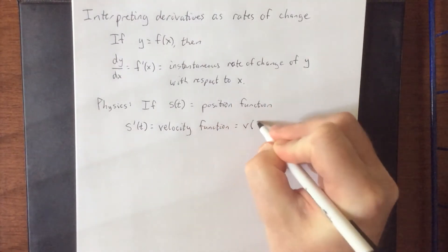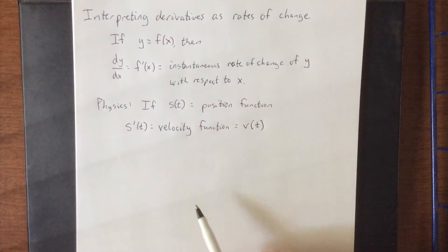More specifically, an instantaneous velocity function. If we were interested in an average velocity function, that would be a different formula.